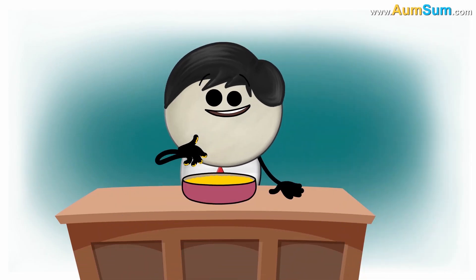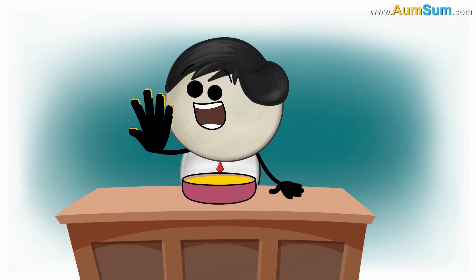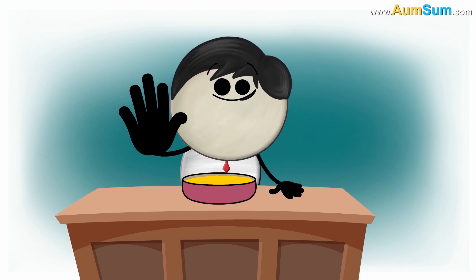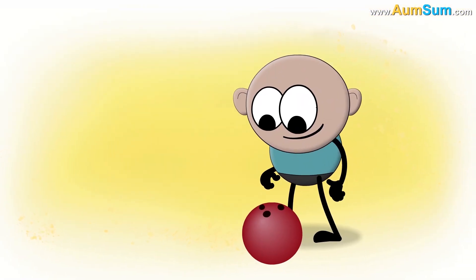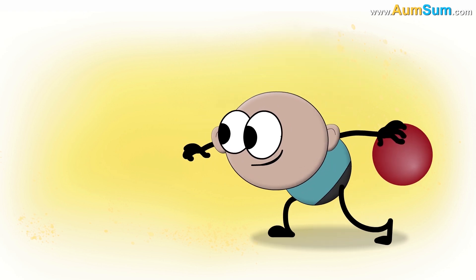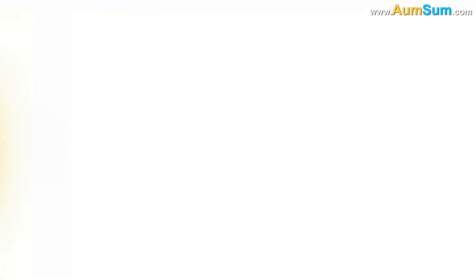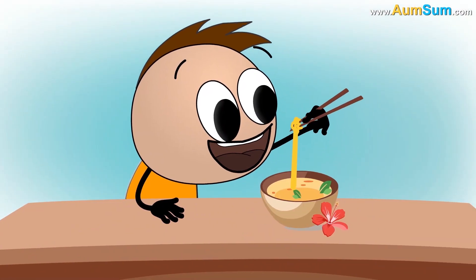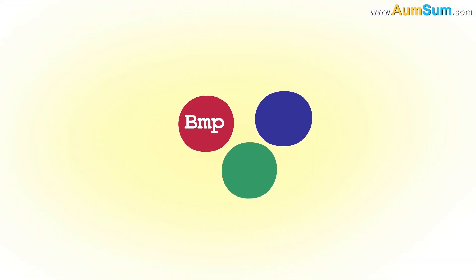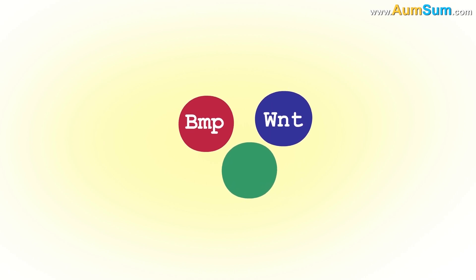Why do we have five fingers? A theory suggests that we have five fingers because together they make a perfect strong grip. Using them, we can operate small objects with great control and precision. A second theory suggests that three molecules called BMP, WNT, and SOX9 are responsible for the five fingers.